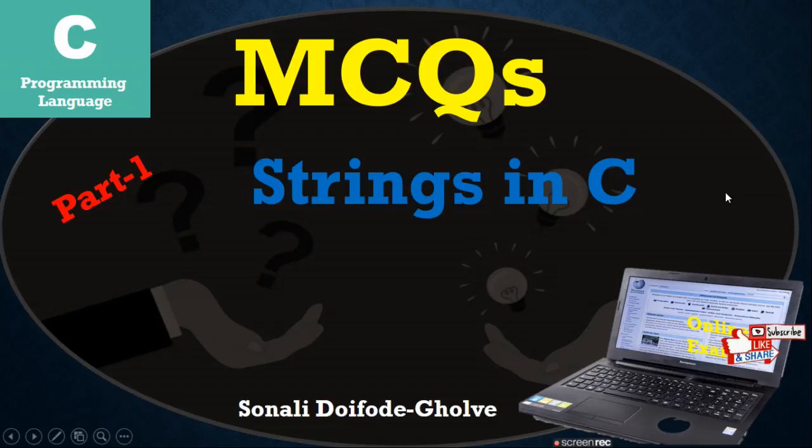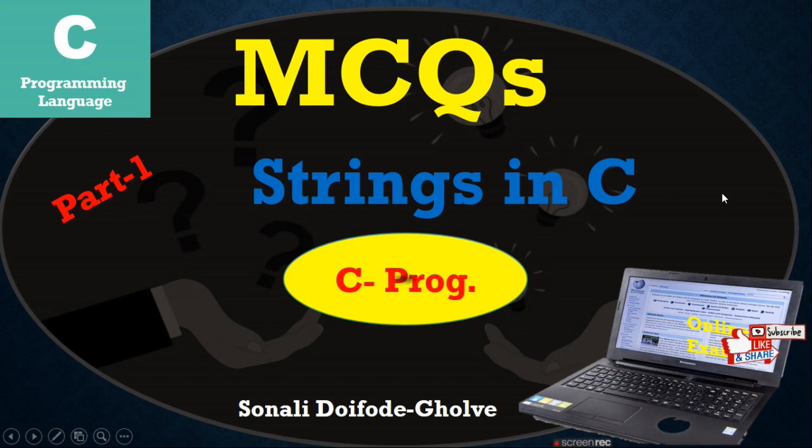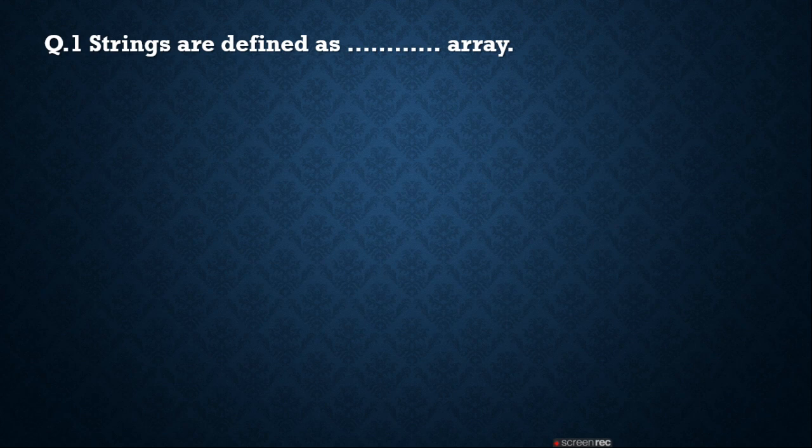Hello everyone. In this part, we will cover multiple choice questions based on the topic strings in C programming. What does it mean by strings? String means group of characters, ended with a null character. So let's start with the first question, question number 1.